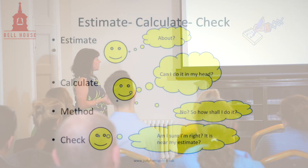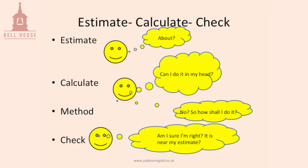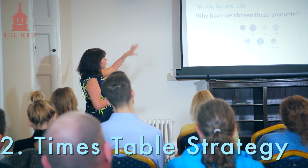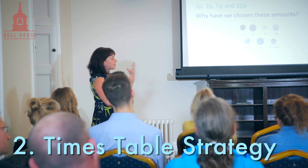Try to get them to estimate — thinking about what calculations they're going to do, whether they can do it in their head, what method to use, and then to check. The other thing they don't like to do is check their answer. Once they've got the answer, they've got the answer — and if you say 'can you check it?' the answer is usually no.